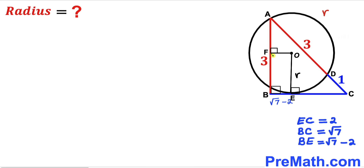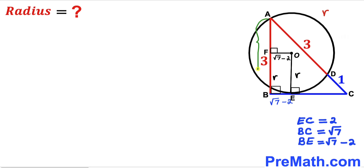I've dropped a perpendicular OF onto side AB. Observe that OF equals BE, so segment OF = √7 − 2. Furthermore, segment BF equals OE, which is our radius r. Since the whole side AB is 3, segment AF turns out to be 3 − r.